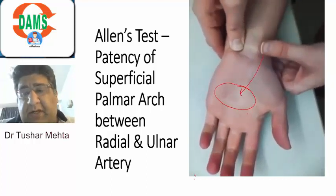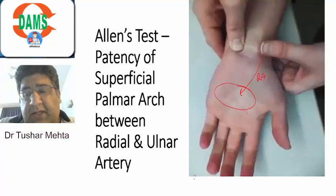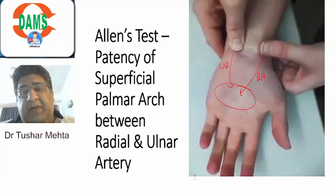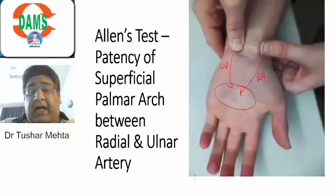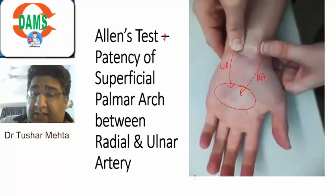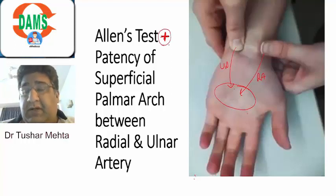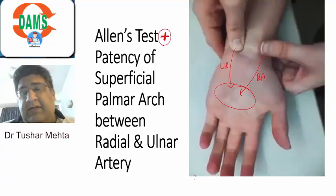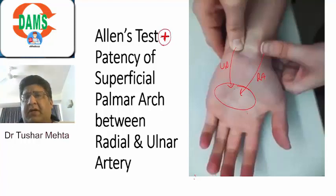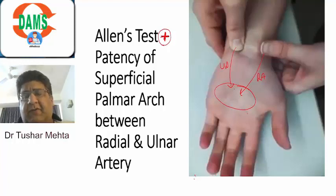Now the pressure is removed from the radial artery and you can see the blanching has again become red. What does that mean? The radial channel is patent. The ulnar channel is patent. Both channels are patent. The arch is patent. Allen's test is positive. Normally, if you're not able to do the job, the test is positive — it's an exception where you're doing a job but the arteries are patent and intact. Allen's test is positive — a very important clinical test.